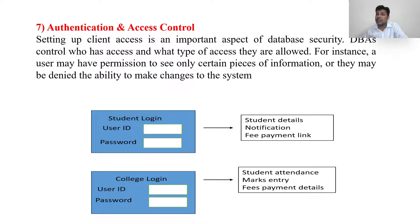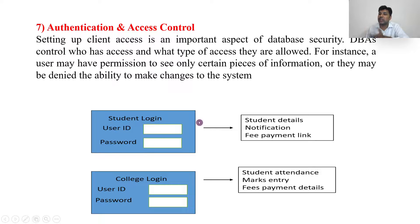Authentication includes passwords, pins, fingerprints, face recognition, and biometrics. All these authentications and access controls determine who should have what permission. For example, student login can access certain things, while a college login can access all — these access controls are done by the DBA.